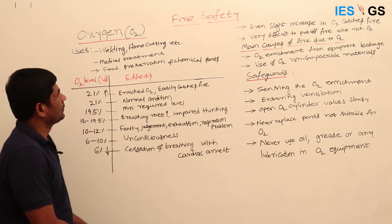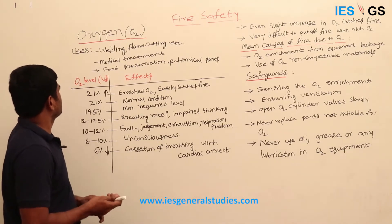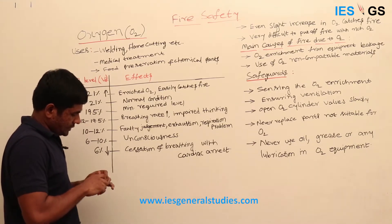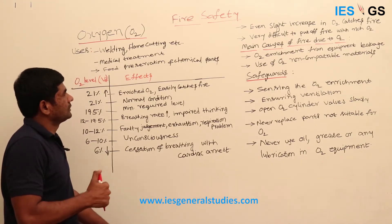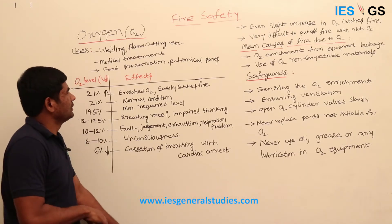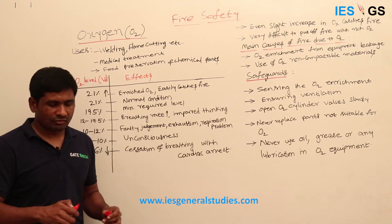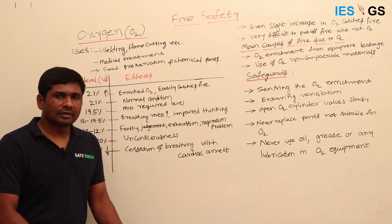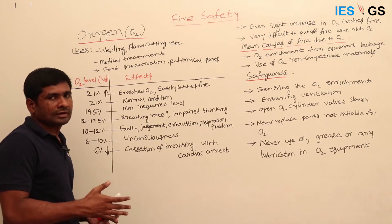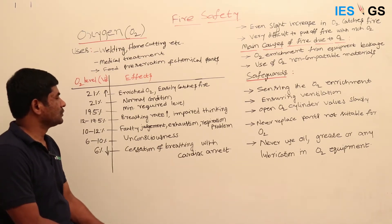The next important component in the fire triangle is oxygen. We use oxygen in many applications: welding, flame cutting, medical treatment. In movies, you often see oxygen masks applied to patients. In most cases, oxygen is stored in cylinders. You might wonder why we store it in cylinders when there is oxygen in the atmosphere. Enriched or pure oxygen means it is not mixed with any other gases.